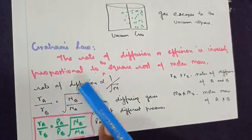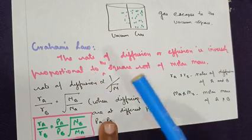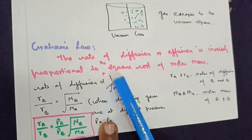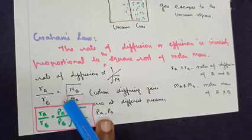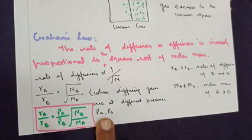Now, mathematically, when we can write, rate of diffusion or effusion is inversely proportional to square root of the molar mass. So, Ra by Rb equals square root of Mb by Ma.